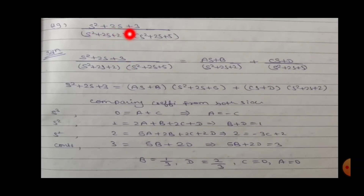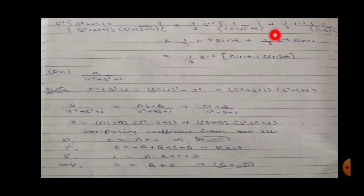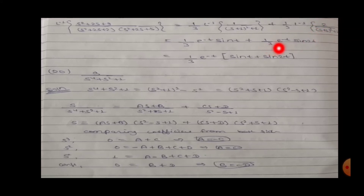Question 19: (s²+2s+3)/[(s²+2s+2)(s²+2s+...)]. Writing into partial fractions (As+B)/(s²+2s+2) plus (Cs+D)/(...). Comparing coefficients: s³ gives zero, s², s, and constant (3) equations. Solving: A=0, C=0, B=1/3, D=2/3. The Laplace inverse gives e^(-t)·sin(t) and e^(-t)·sin(2t) terms.